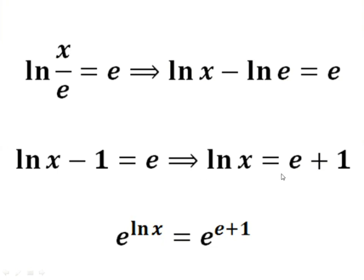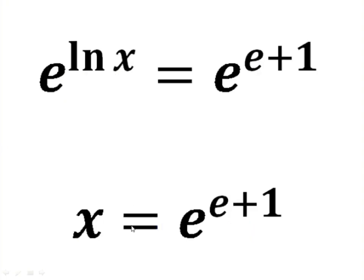Now we can perform the exponential for both sides to get e to the power ln x equals to exponential power e plus 1. e and ln cancel, so we will have x equals to e to the power e plus 1.